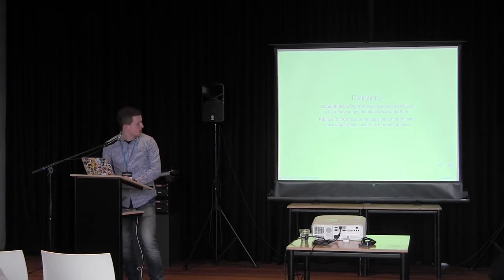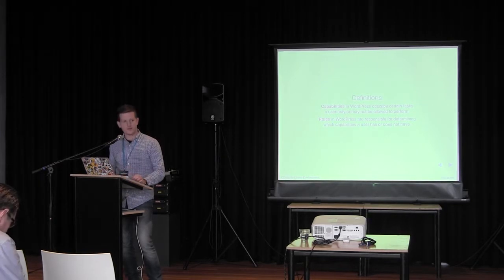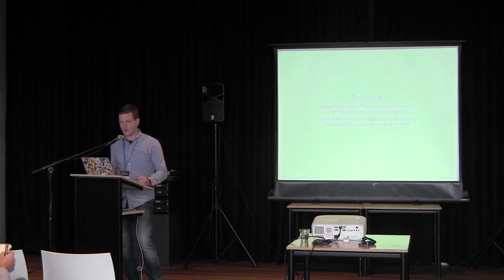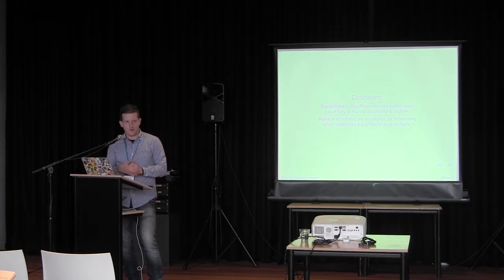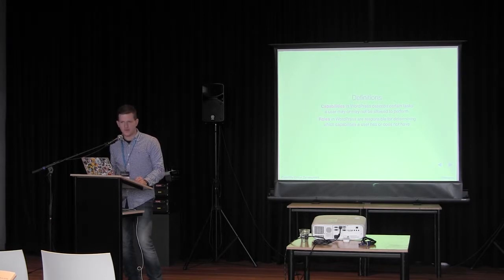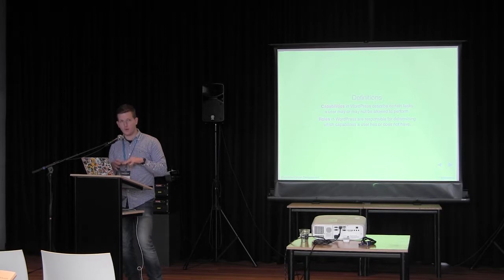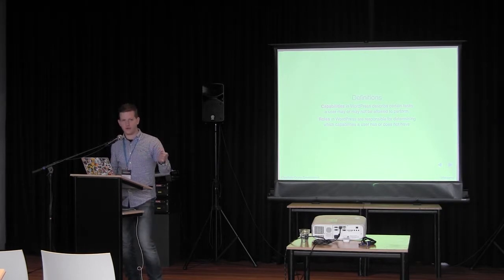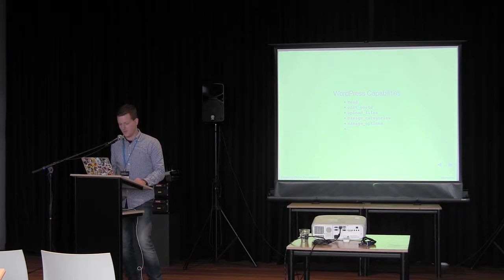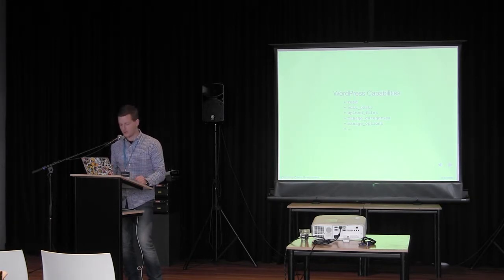First, definitions — what are capabilities? Capabilities in WordPress describe tasks that a user can or cannot perform. For example, 'edit_posts' is a capability. Can the user edit posts, or can the user manage options in WordPress? Those are capabilities — technically just strings that describe what a user can or cannot do. Then roles, which should be fairly well known. Roles are, for example, administrator and editor. Roles define which capabilities a user has, because every role includes certain capabilities, and a user with that role also has all those capabilities.